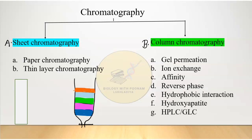On the basis of stationary phase, chromatography has two different types. One is sheet chromatography and one is column chromatography. In sheet chromatography, a sheet is used as the stationary phase support. In column chromatography, a column is used instead.